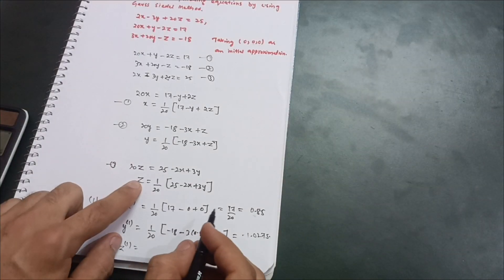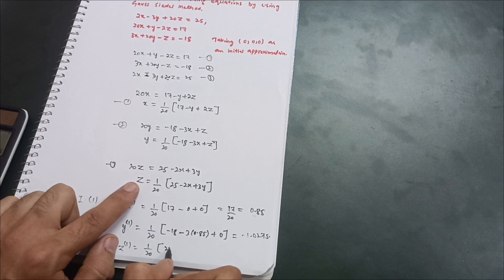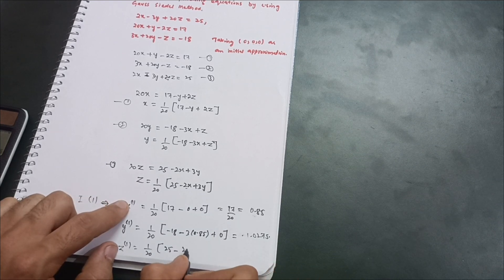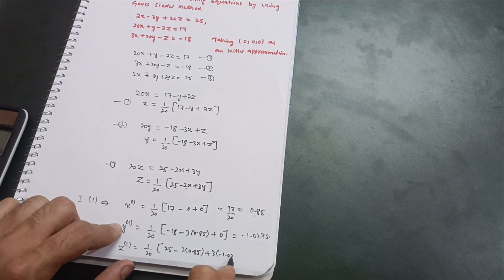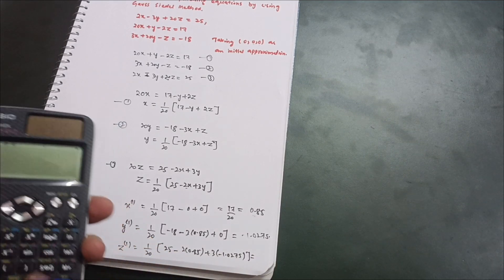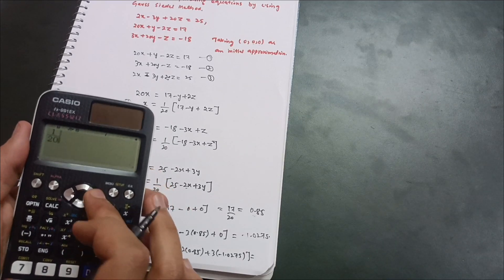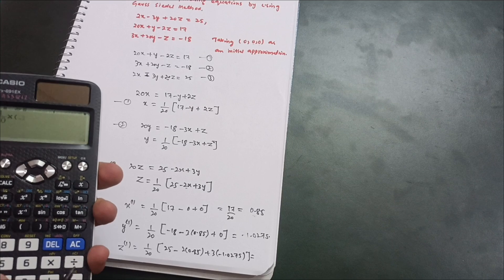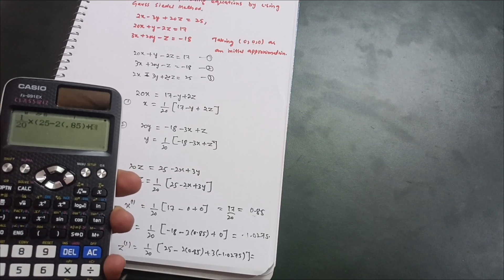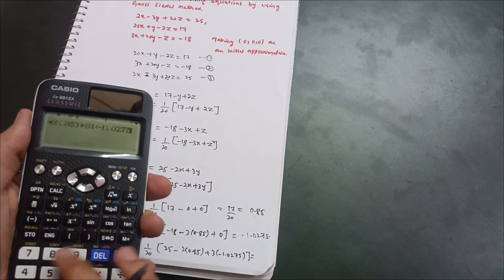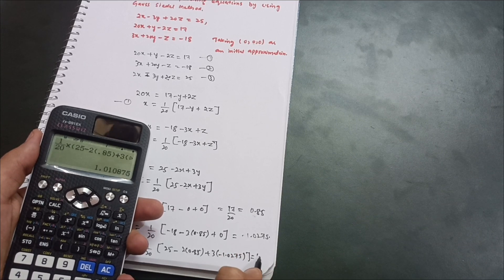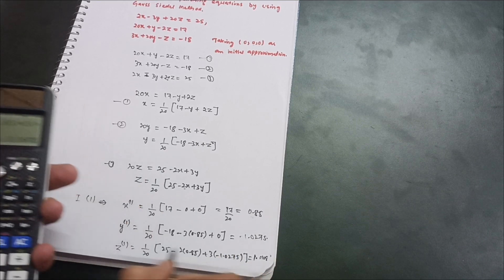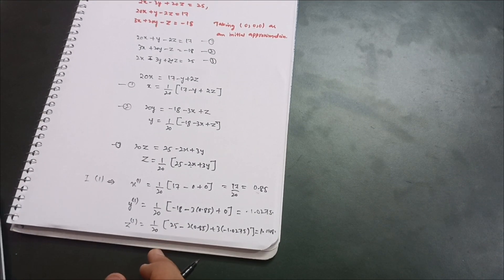Next, z1: using equation 3, z1 = (1/20)(25 − 2x + 3y). Substitute x1 = 0.85 and y1 = −1.0275: z1 = (1/20)(25 − 2×0.85 + 3×(−1.0275)) = (1/20)(25 − 1.70 − 3.0825) = 1.0108. So z1 = 1.0108. This completes the first iteration.